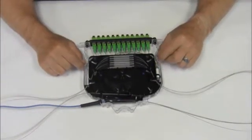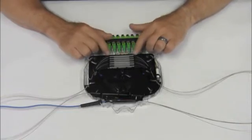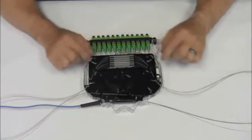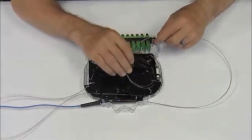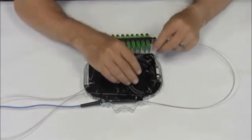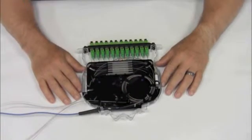Now that the splices have been completed and the splice sleeves stored in the tray, we'll go ahead and store the slack in the tray. Simply take the 250 micron bundle and wrap it underneath the provided restraints.